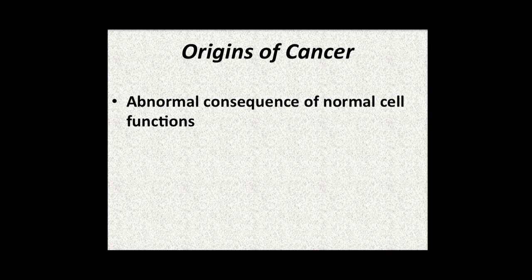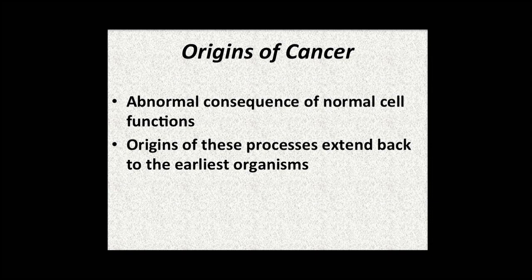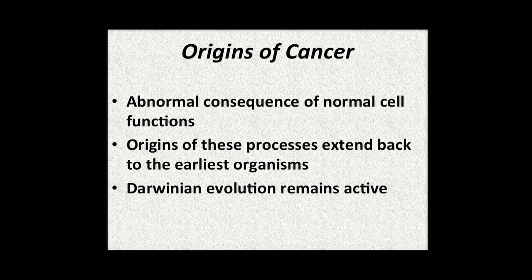What did we learn? That cancer emerges from our normal cells, that it's been doing so for a long time, and it takes advantage of manipulating all the normal aspects of a cell, just like everything in daily life. The origins of these processes go all the way back to the fundamental aspects of living organisms themselves. And Darwinian evolution remains active.